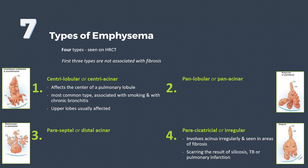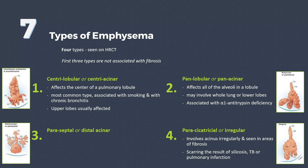Centriacinar emphysema is the most common type, associated with smoking, and usually involves the upper lobes. Panacinar emphysema involves the whole acinus and can involve the lower lobes or whole lung. This type points toward alpha-1 antitrypsin deficiency, and its levels should be tested.